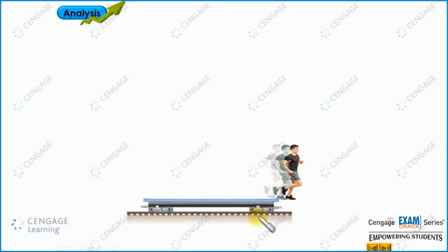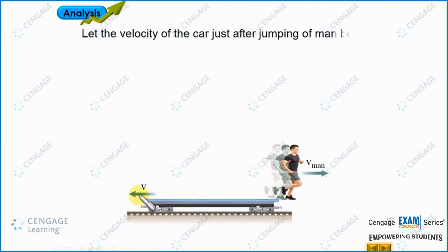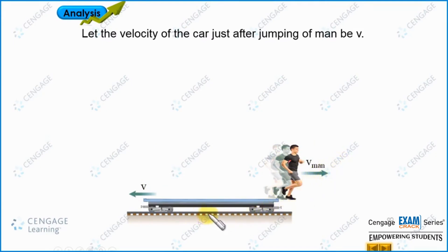Let us assume the velocity of the car just after jumping is v, and it should be in the leftward direction. Why leftward? Because initially the system is at rest and the man is gaining linear momentum in the rightward direction. The initial linear momentum of the system is zero, so for momentum to remain zero, the car has to move leftward. Let us call this recoil velocity v.